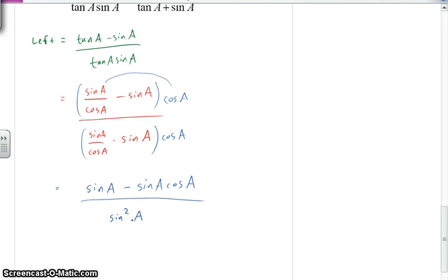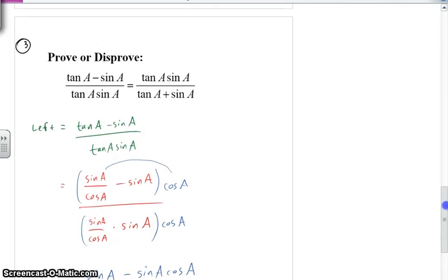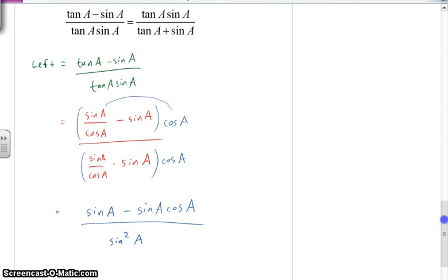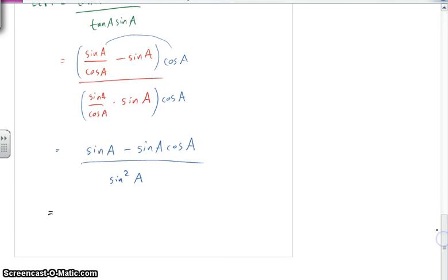So what do we do? Well, if I look at the numerator, I see that I can factor that. I don't know, is that a good thing to do? Well, I know that I can factor a sine A out, and I do notice that on the right side, where I'm trying to get to - keep the eye on the prize here - there's a sine A, so it kind of makes sense to at least try that.